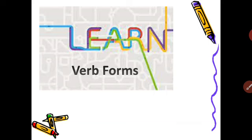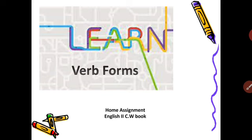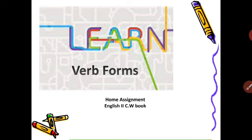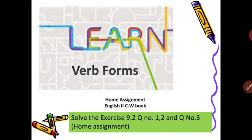Learn all the verb forms because not every word follows the rule. There are some regular verbs and irregular verbs, so you have to learn all the present, past, past participle, and present forms of verbs by heart, because anything will come in a sentence. Home assignment: exercise number 9.2 in your English 2 classwork book — solve questions 1, 2, and 3.